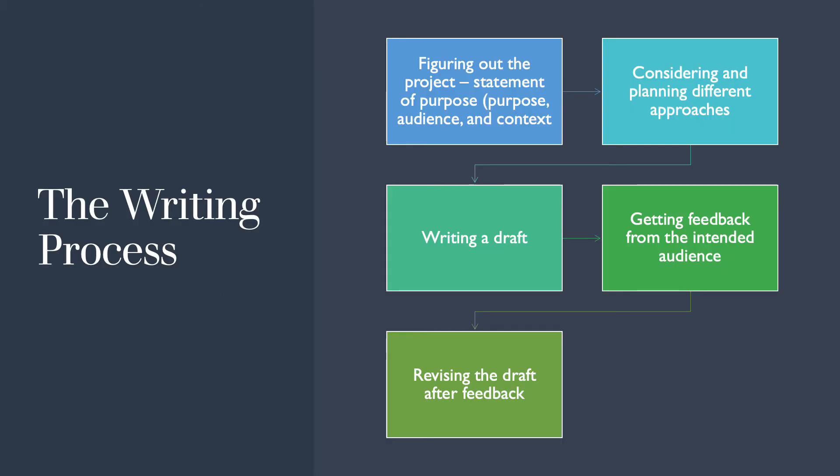The first thing I want to talk about is the writing process. For this course we'll look at: figuring out the project by creating that statement of purpose; considering and planning different approaches; writing a draft; getting feedback from the intended audience; and then revising the draft after you gain that feedback. While this process is outlined linearly on this slide, it's not necessarily a linear process — you can go back and forth through any of those stages at any time. The best writers don't do it in a linear fashion.